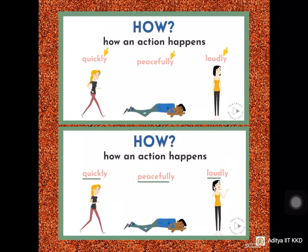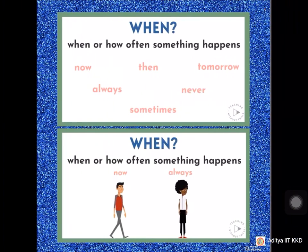When or how often something happens? Examples: now, then, tomorrow, always, never, sometimes. When did you go there? 'I came yesterday' is a correct usage. 'I have come yesterday' is a wrong usage.